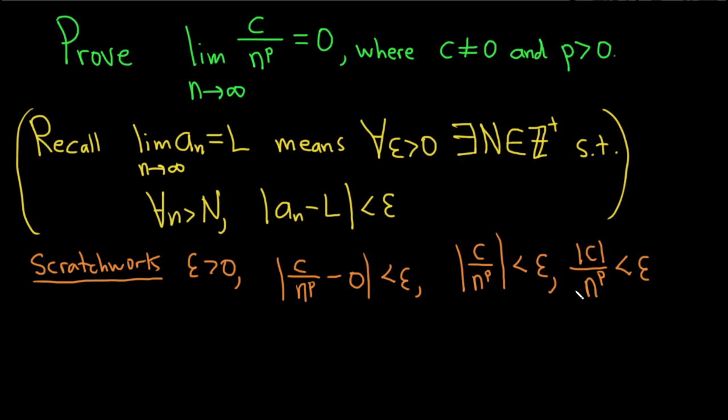Let's solve for n. Multiply by n to the p, so the absolute value of c is less than epsilon times n to the p. Divide by epsilon, which is positive, so the absolute value of c over epsilon is less than n to the p.